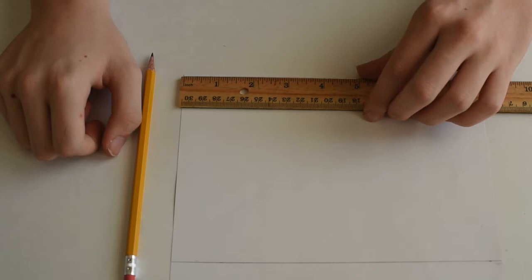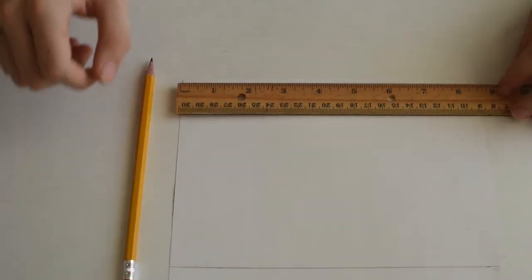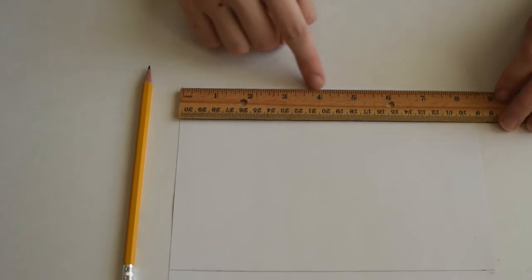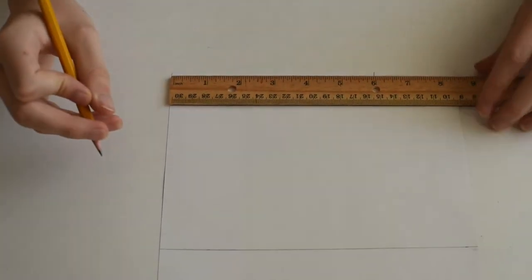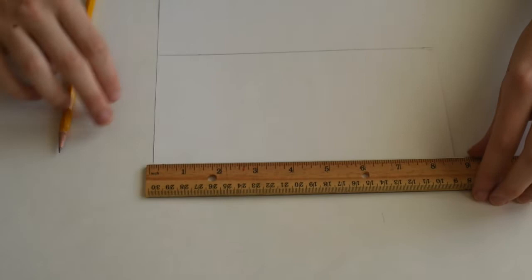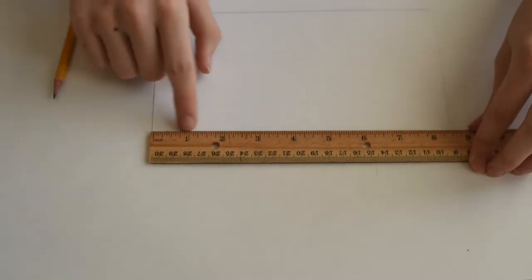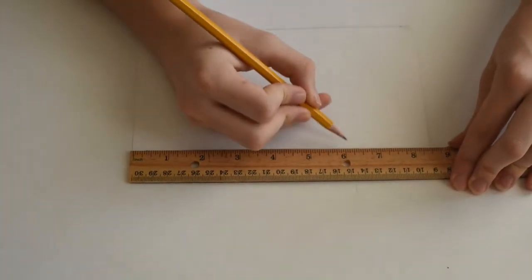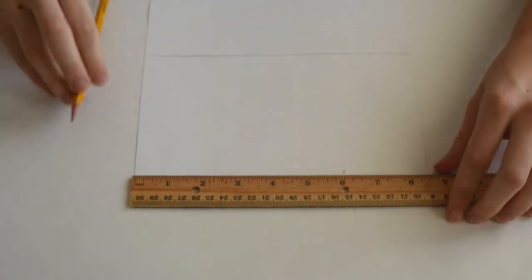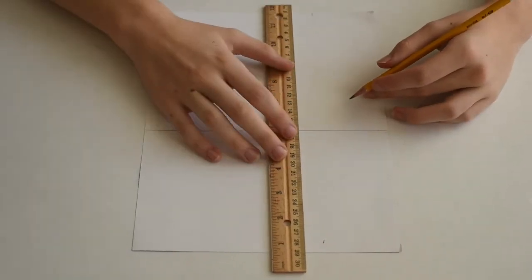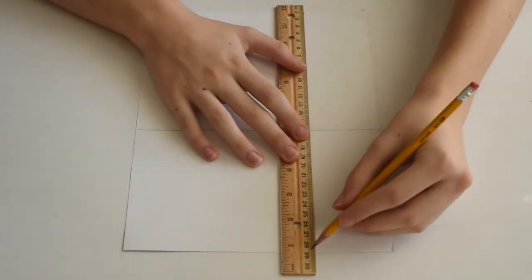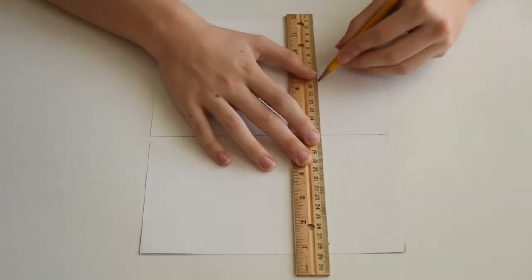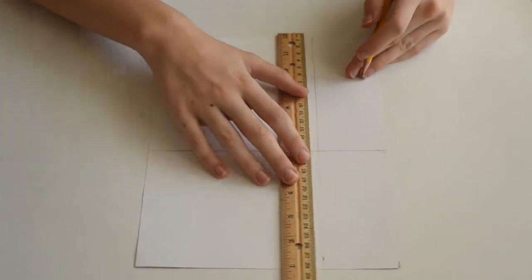Next we're going to measure in from the left six inches at the top. So place your ruler at the top, find your six inch mark, and draw a small mark. Let's do the same thing at the bottom of the page. We find our six inch mark, draw a small dot, and then we're going to join those two dots with the ruler, holding the ruler steady in the middle.